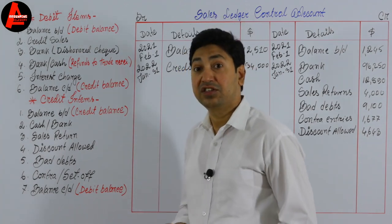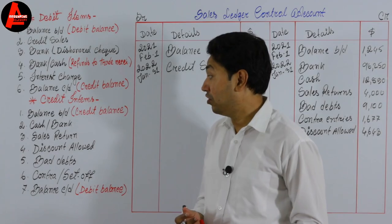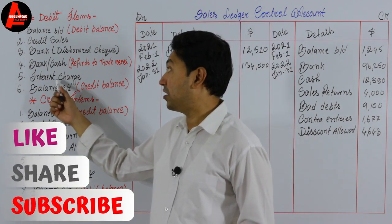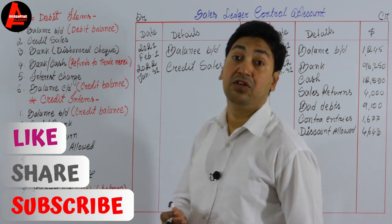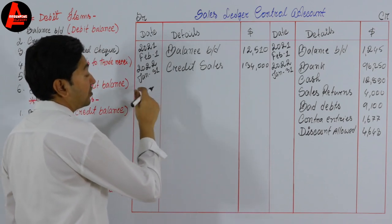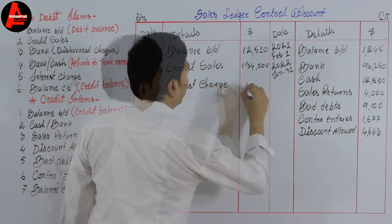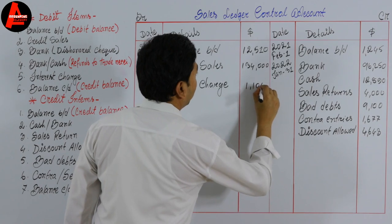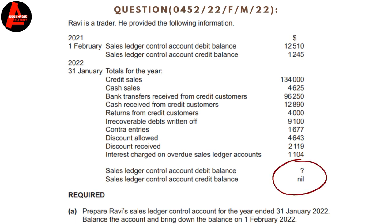Interest charged on overdue sales ledger accounts is $1,104. This interest charge is a debit item, so it will be recorded on the debit side. We write the same date — 2022, January 31st — and record interest charge: $1,104.